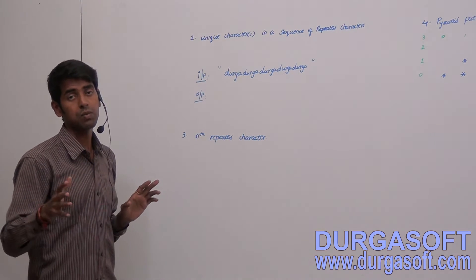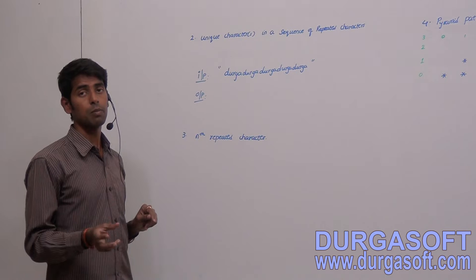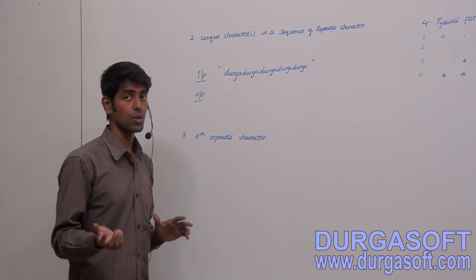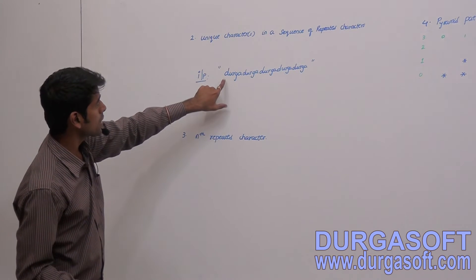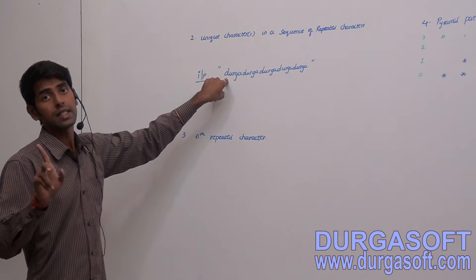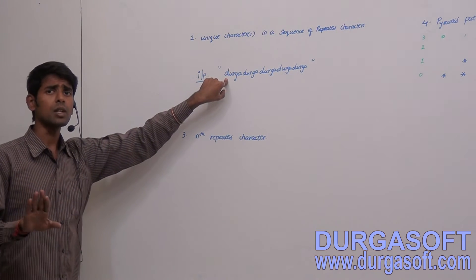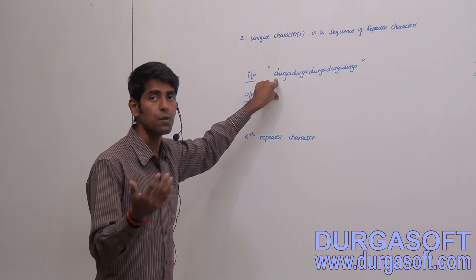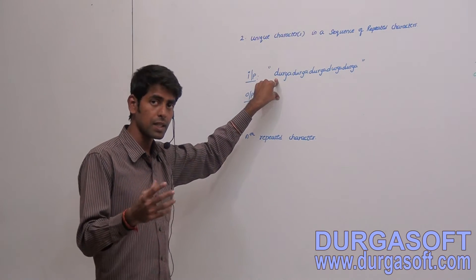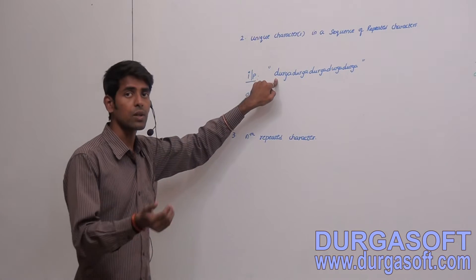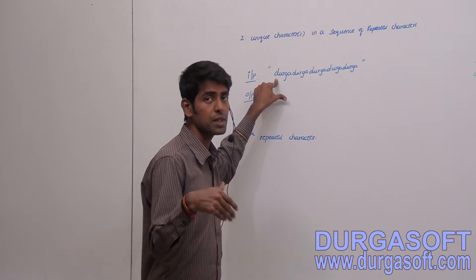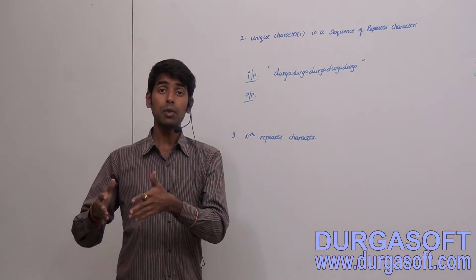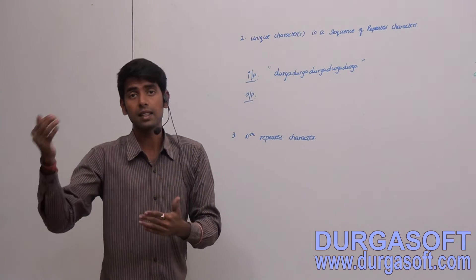As part of this session we are going to describe one logic — you can try to enhance it. What I am going to do is take each character and put it into a StringBuffer or any string instance. If it is already contained there, I am not going to insert it again. After completing the entire iteration, I will print that instance which holds the unique characters.